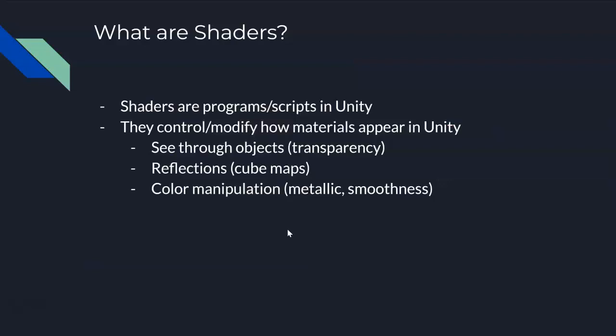So what are shaders in Unity? Shaders are programs or scripts that control how light is manipulated and how materials appear inside Unity. There are all kinds of different shaders. Some properties allow you to set a shader that lets you see through an object and gives it transparency — so it's not just how it appears, but whether it appears at all. You also have materials that control reflections, and there are things called cube maps that allow a material to actually reflect its surroundings.